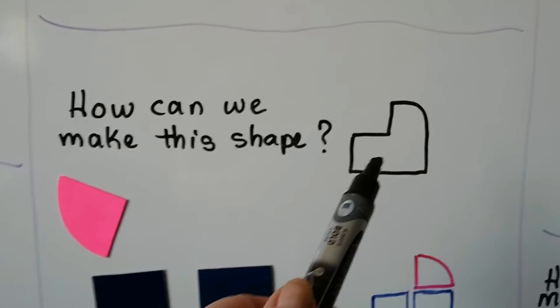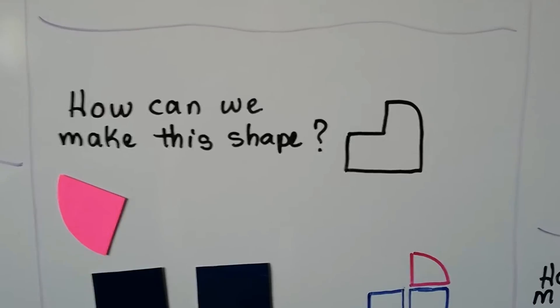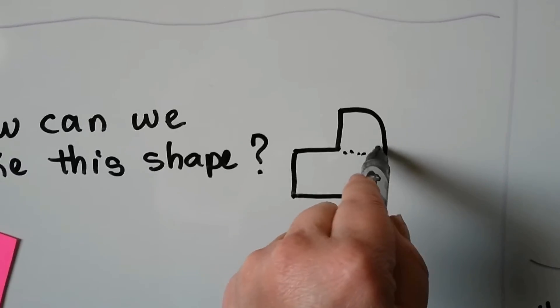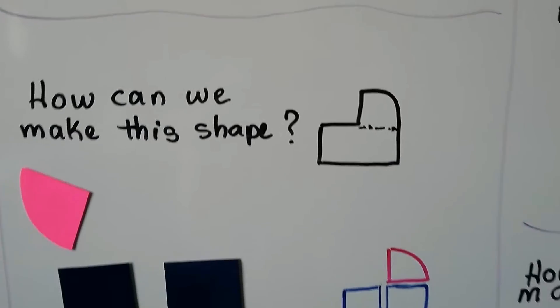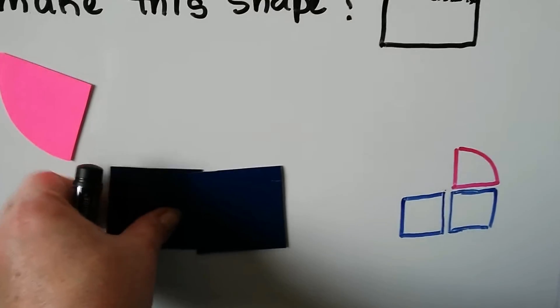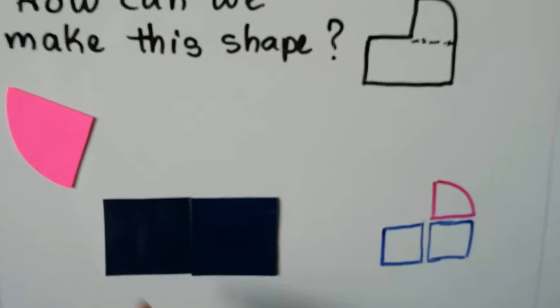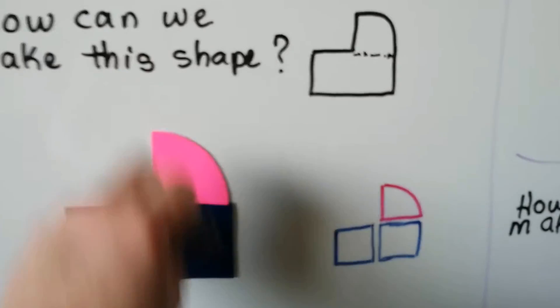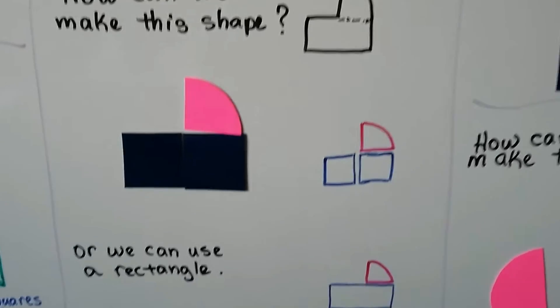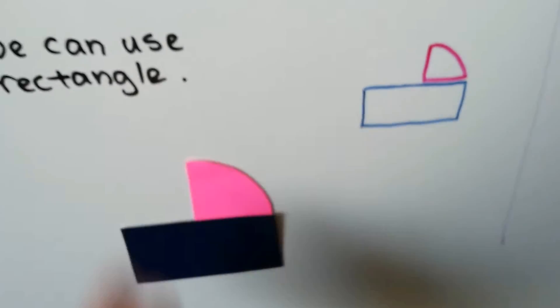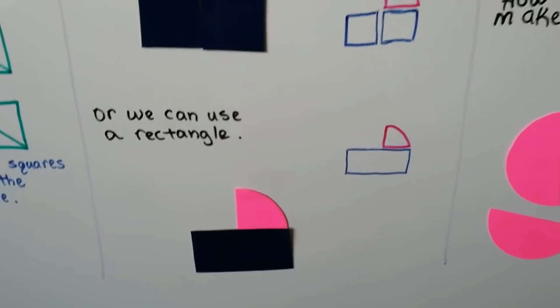This shape looks like a baby bassinet. Can you see the shapes that are in it? If we draw a line along here, do you see the rectangle? We could make the rectangle with two squares, and we can use part of a circle to finish it. Or we could just use a rectangle and put it right here — that would make that shape.